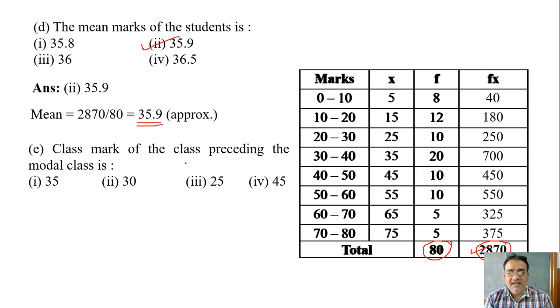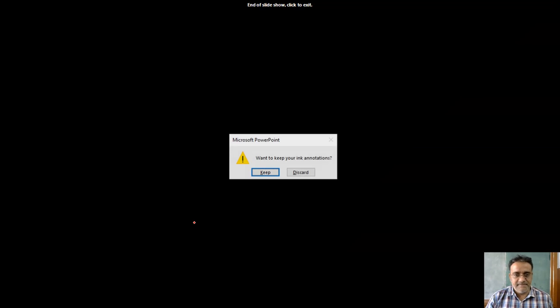And the last question is the class mark of the class preceding the modal class. Modal class is 30 to 40, so the preceding class is 20 to 30, and class mark is 25. So the correct option is the third one. Okay, so now we'll see the next case study based question in the next video. Thank you very much.